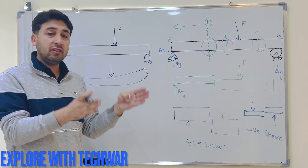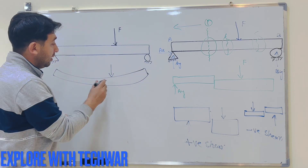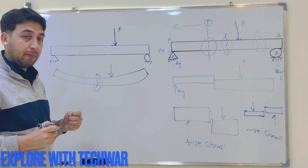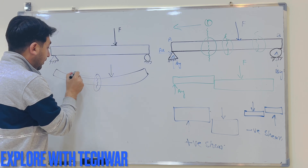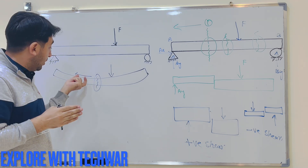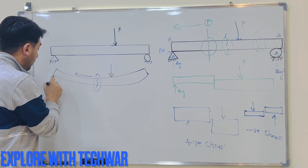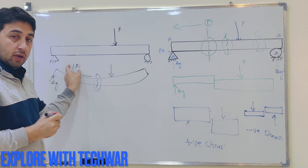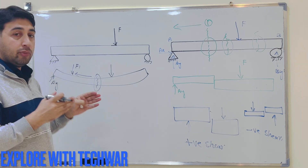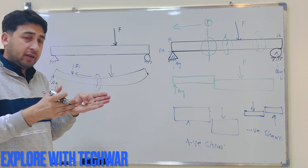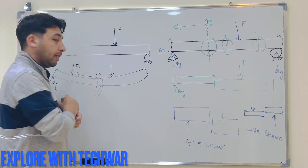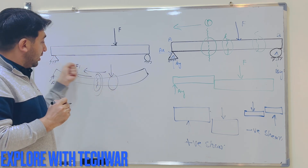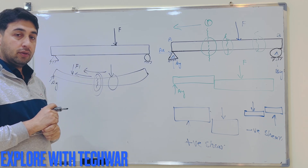We measure this bending tendency by summing all the moments produced by external forces on either side of that section. If I want to measure the bending at a particular cross section, on the left side I will take all moments produced by the forces on that side — say AY and any other forces like F1 or F2. I add all those moments on either side of the section and that gives me the bending moment at that section.